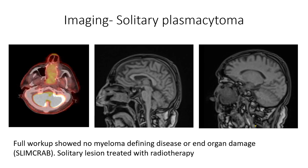You would need to work these patients up pretty thoroughly, and they would definitely need a bone marrow. You would be looking for any myeloma defining disease or end organ damage. With a solitary lesion, you can treat it with radiotherapy. If there's more than one plasmacytoma, however, things do change. Either way, you're going to refer to haematology.